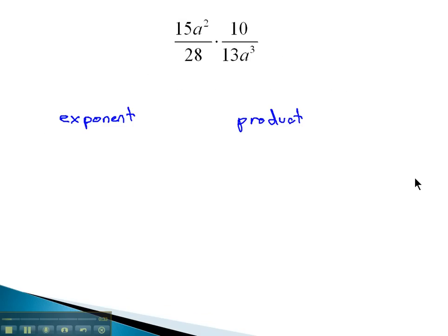So for example, when we have 15a² in the numerator for this example, we'll write the a² as a times a, over 28, times 10 over 13a³: a times a times a, three a's multiplied together.